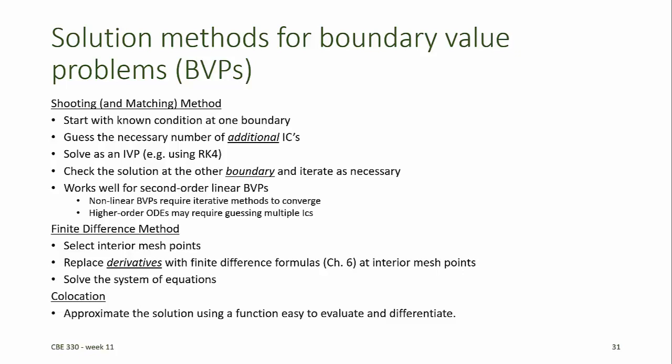One advantage of using the collocation method is that the solution is an analytical expression for a function relating the dependent variables to the independent variable. This function can then be evaluated at any point in the domain. Furthermore, we get to choose the functional form so the function looks the way we want it to look. In the shooting method we only know values at the IVP solver points, and in the finite difference method we only know values at the mesh points — neither provides an analytical expression evaluable at any domain point. BVP4C, the MATLAB boundary value problem solver, uses a combination of collocation and finite difference methods with an adaptive mesh to achieve a desired accuracy.